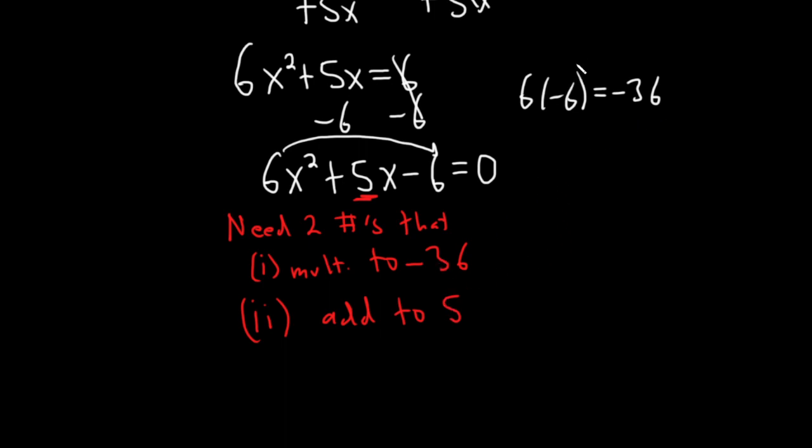Let's think about what multiplies to negative 36. So 6 and negative 6, that's not going to work. So 3 and 12, that's not going to work. 6 and negative 6, that's not going to work. What else? Oh, 4 and 9, that should work. And if we make the 4 negative, when we add them, we'll get a positive 5.